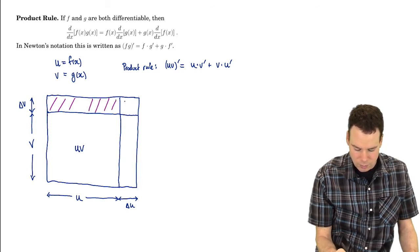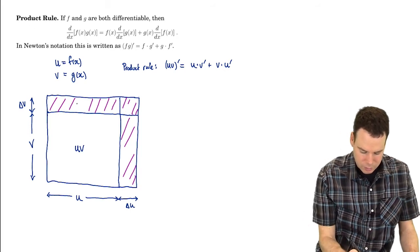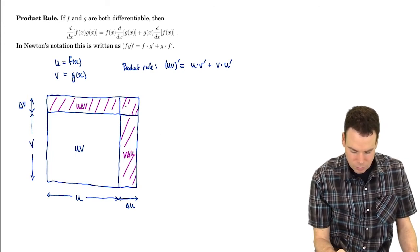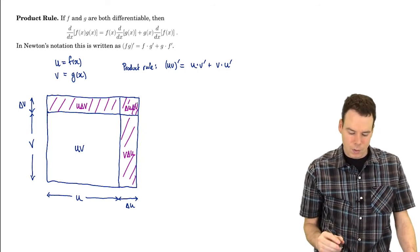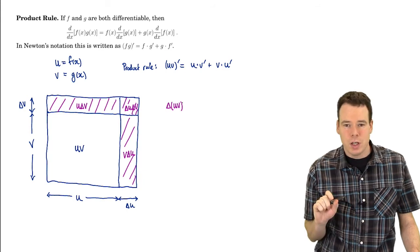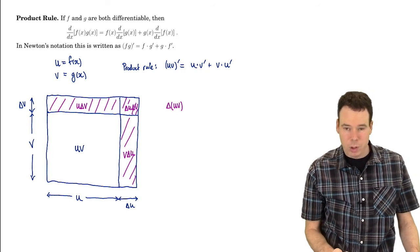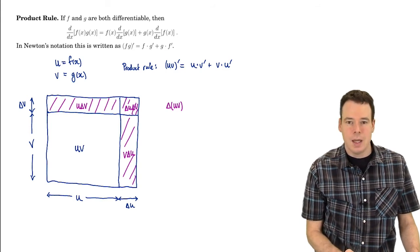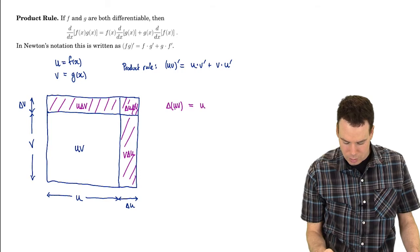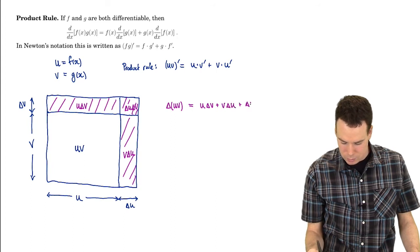What's the area of this extra stuff added on? Well this extra stuff added on can be split up into these three regions. This first one has area u delta v. This other one has area v delta u. And this little tiny one in the corner is delta u delta v. So if I look at the change in the product, the change in product is this whole purple region. It originally was uv and now it's the area of the whole big rectangle with that purple section added. The change in uv is u delta v plus v delta u plus delta u delta v.